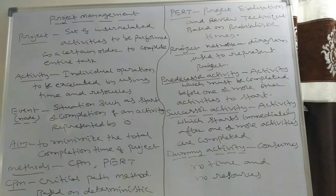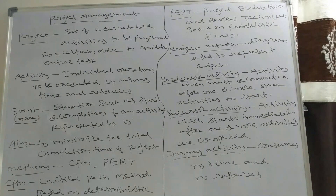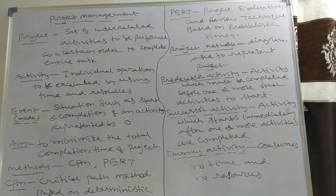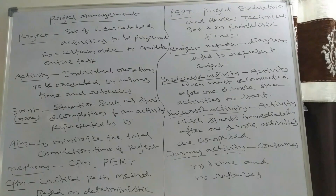What is the aim of project management? Why do we study project management? The aim is to minimize the total completion time of the project, satisfying resource constraints. In the building construction example, we have to find the minimum duration subject to resource constraints. Project management is also a minimization problem.